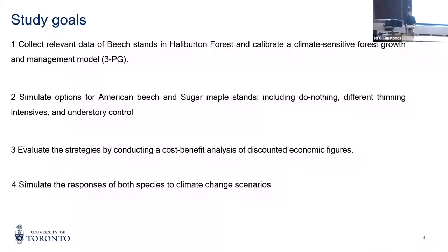We have some goals in our study. Basically, collect relevant data of beech stands in Halliburton Forest and calibrate a climate-sensitive forest growth and management model called 3PG. Simulate options for American beech and sugar maple stands, including do-nothing, different thinning intensities, and understory control. We are also going to evaluate the strategies by conducting a cost-benefit analysis of discounted economic figures, and finally simulate the response of both species to climate change scenarios.